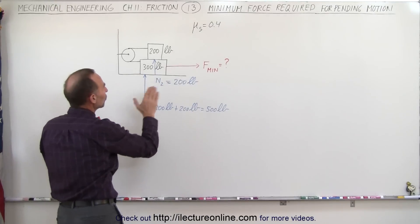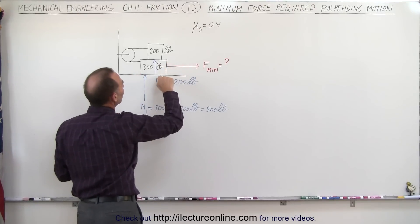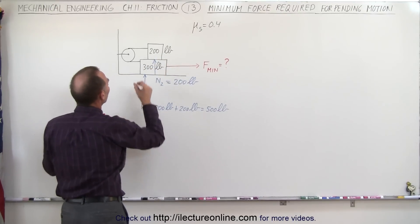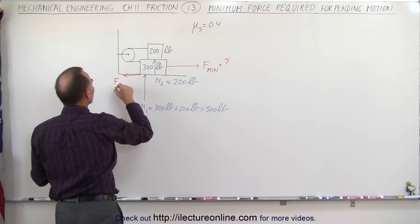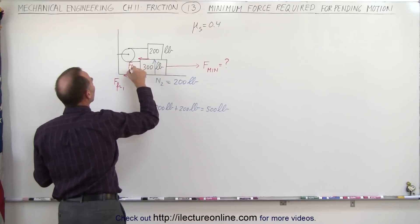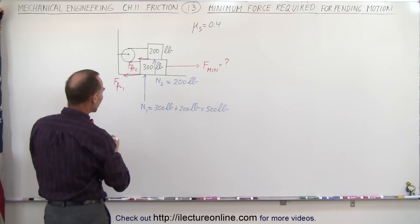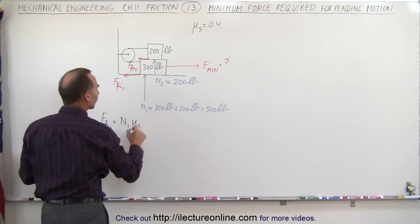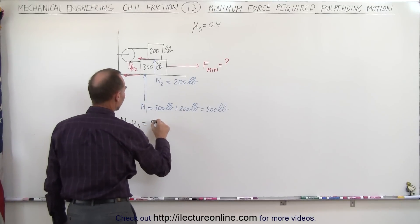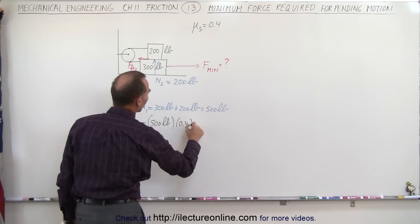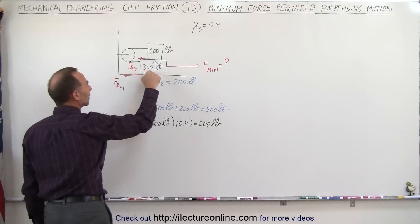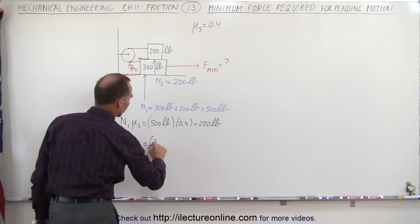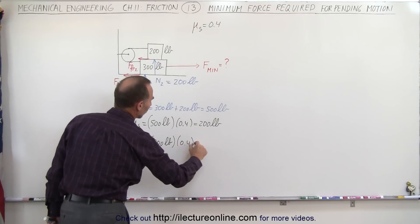Now if we only look at the bottom block and try to figure out the force required to make it move, notice you'll have to fight the friction between the floor and the block, and the friction between this block and that block. Both friction forces pull in the opposite direction of the intended motion — let's call them friction force 1 and friction force 2. Friction force 1 equals N1 times the coefficient of static friction: 500 pounds times 0.4, which is 200 pounds. Friction force 2 equals N2 times mu sub s: 200 pounds times 0.4, which is 80 pounds.